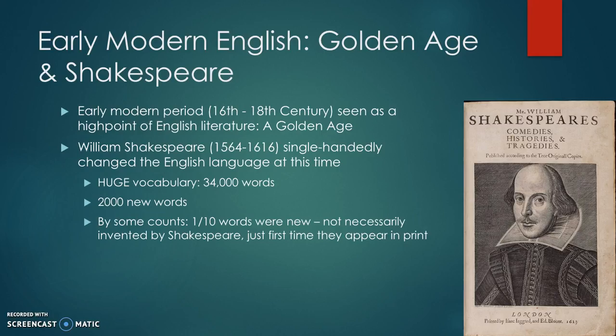Early modern English also saw a golden age of English literature — a high point in terms of creativity — in the 16th to 18th centuries. This was the time of William Shakespeare, who almost single-handedly changed the English language forever. He had a huge vocabulary; by some counts he uses around 34,000 different words in his plays and poems, and around 2,000 of those had never appeared in print before.